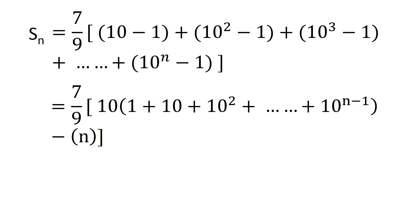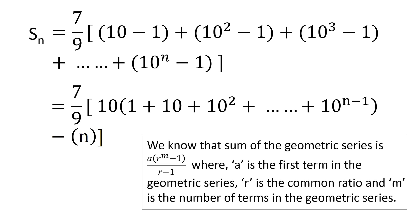We can factor out a 10 from the geometric series. We know that the sum of the geometric series is a times r raised to the power m minus 1, divided by r minus 1, where a is the first term in the geometric series, r is the common ratio, and m is the number of terms in the geometric series.